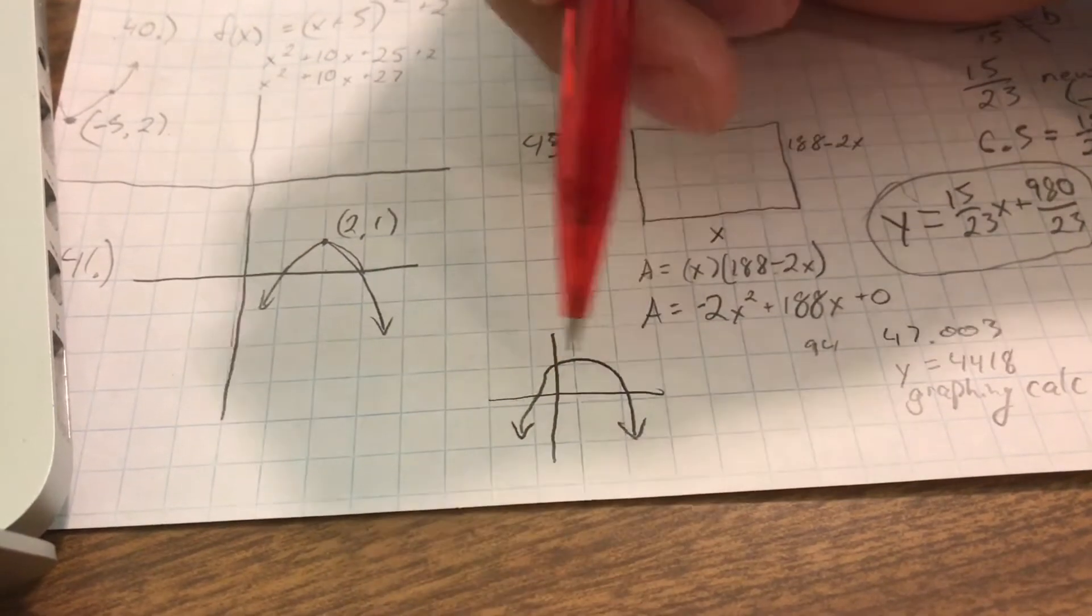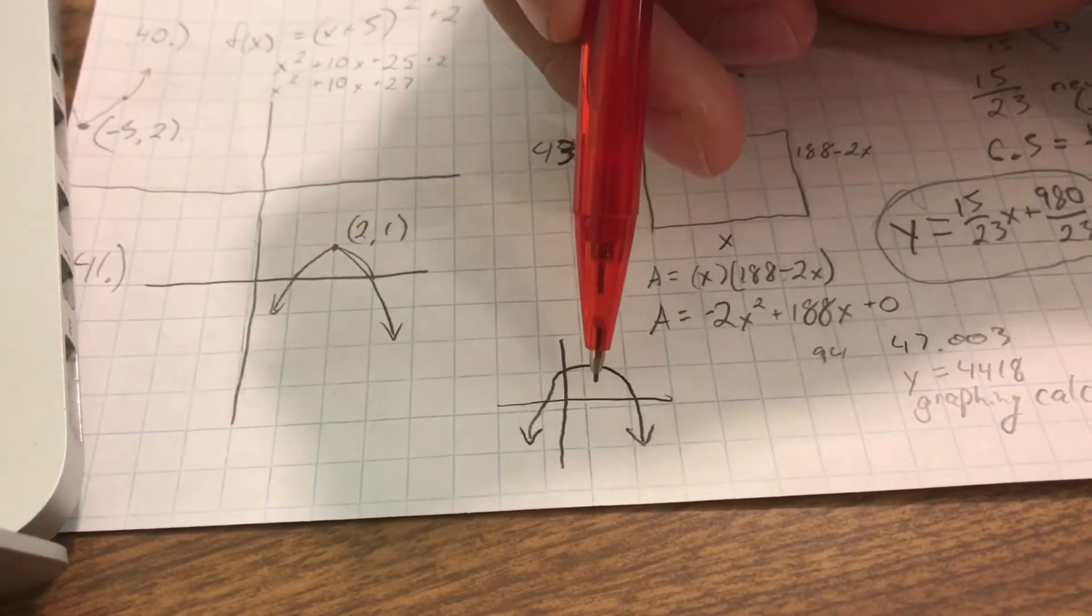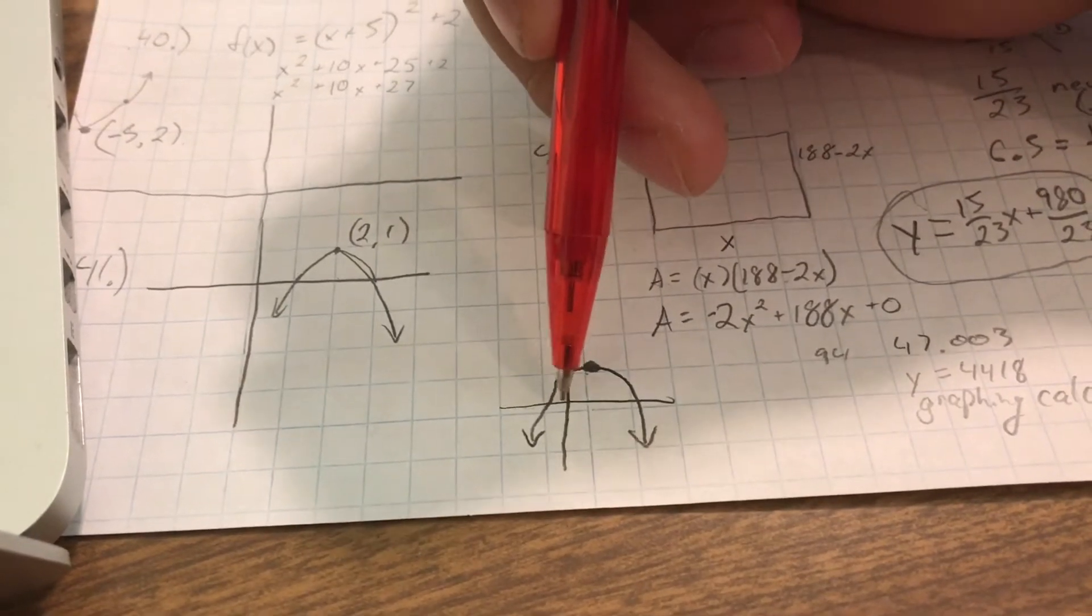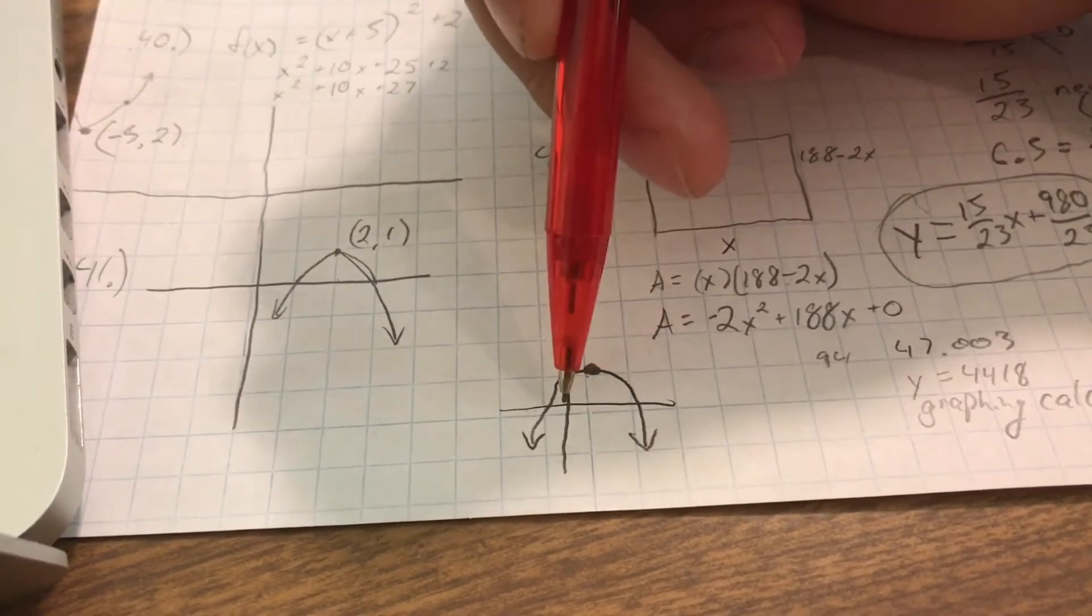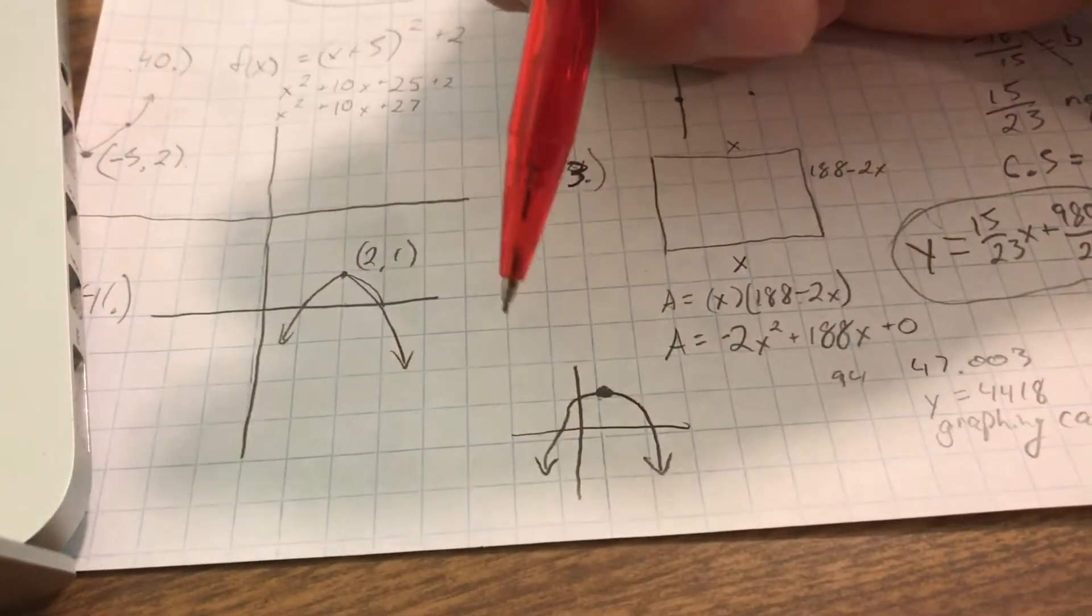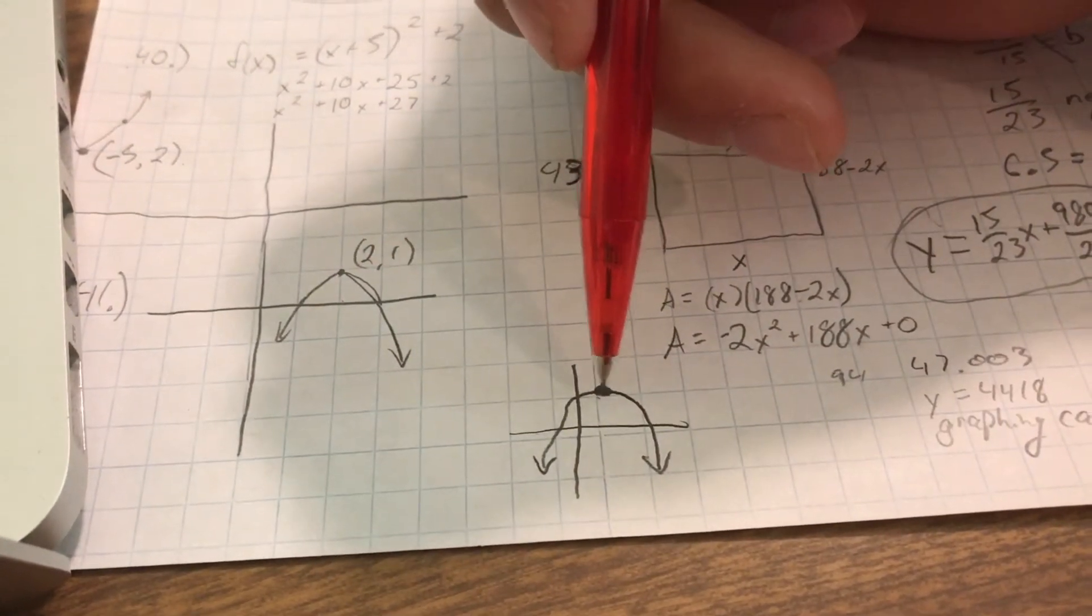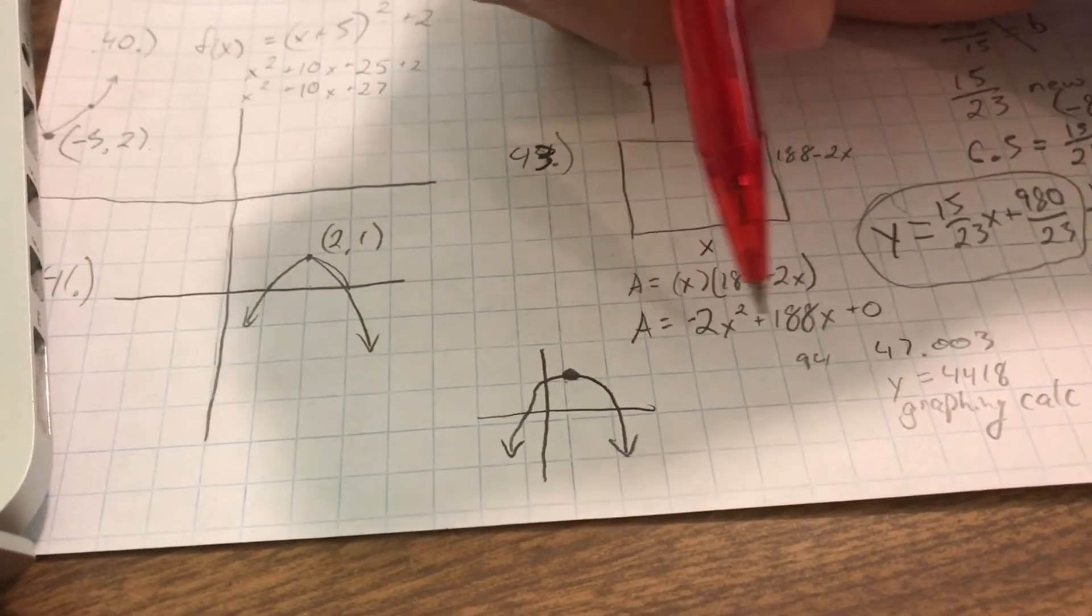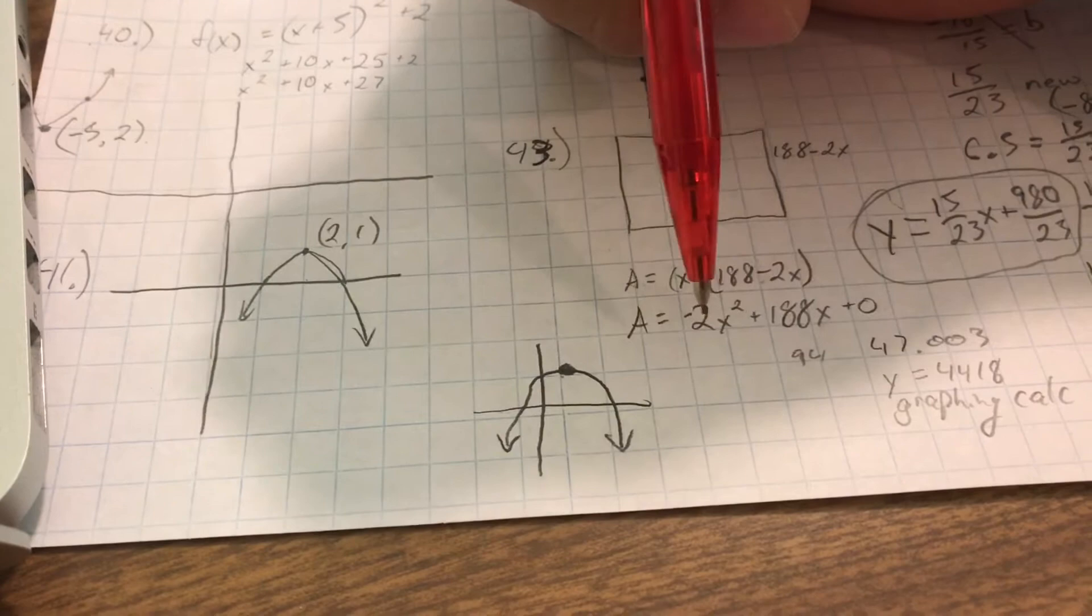So we know it's going to look something like that. And if we're finding the maximum, we want to look for what is the highest point. Since this is A, we want to know what is the highest value of, we would normally say y, or the highest value of the function. So we're going to be looking for this. So we want to go into our graphing calculators, put this into the y equals, and now I'm going to walk you through that.